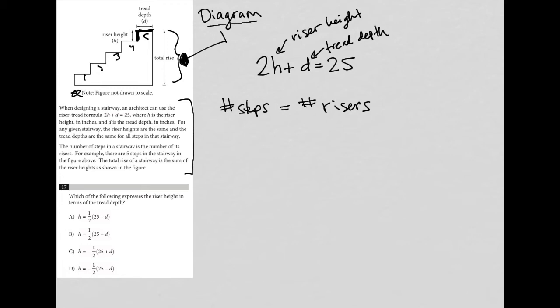The total rise of a stairway is the sum of the riser heights. So total rise equals sum of H. So you can do this symbol if you know that symbol.